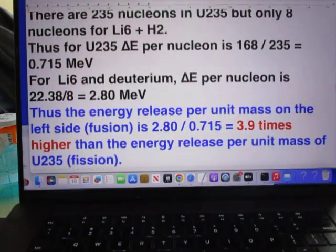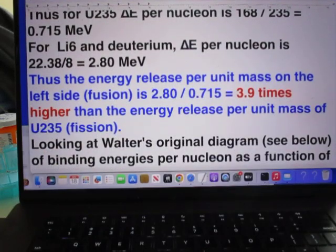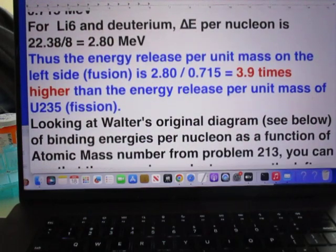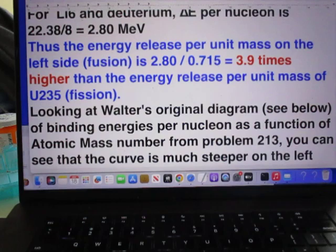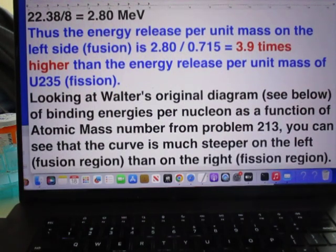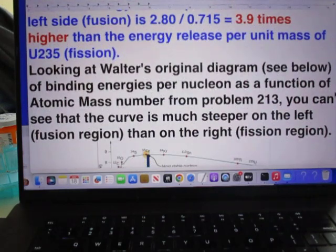Thus for uranium-235, delta E per nucleon is about 0.715 MeV. But for lithium-6 and deuterium, it is about 2.8 MeV. It is more. Thus the energy release per unit mass on the left side is about 3.9 times higher than the energy release per unit mass on the right side, uranium-235. So fusion is more effective.